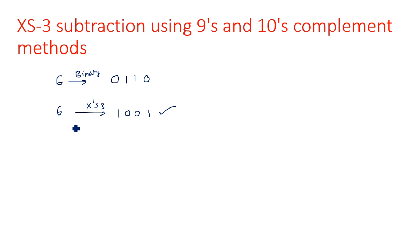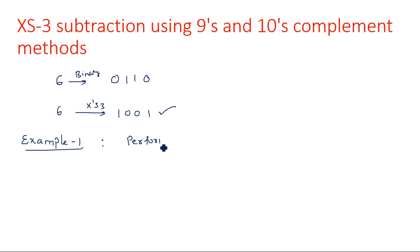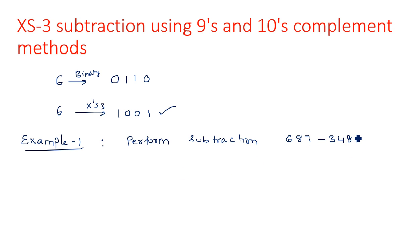Now, using 9s complement and 10s complement, how can we do the subtraction of XS3 code? Let us take an example. Example 1: Perform subtraction for the numbers 687 minus 348. Here 348 is the subtrahend, which needs to be converted into the 9s complement form.